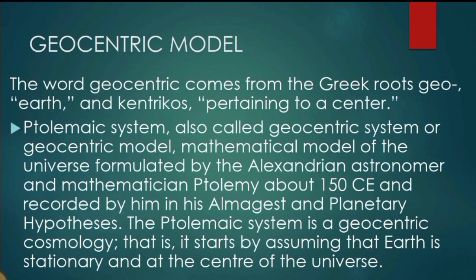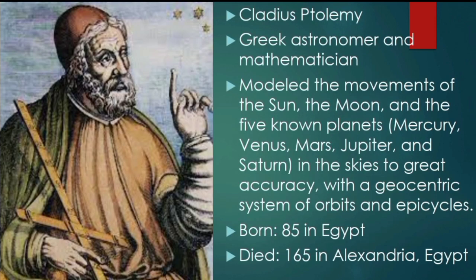Number one, we have the geocentric model. The word geocentric comes from the Greek roots 'geo' which means earth and 'centric' pertaining to a center. Also called the geocentric system, it is a mathematical model of the universe formulated by the Alexandrian astronomer and mathematician Ptolemy about 150 CE, recorded in his Almagest and Planetary Hypothesis. The Ptolemaic system assumes that earth is stationary at the center of the universe.